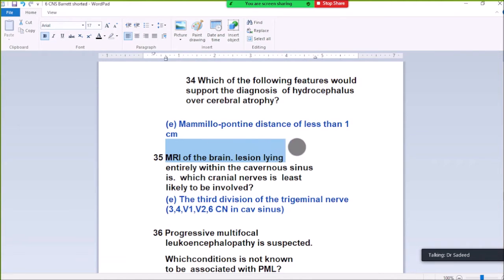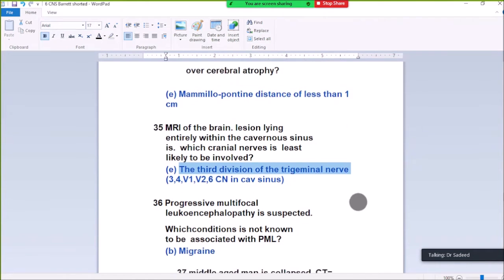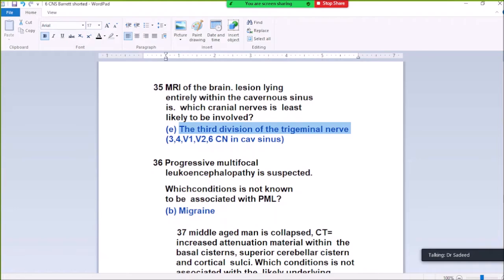Question 35. MRI of the brain shows a lesion lying entirely within the cavernous sinus. Which cranial nerves pass through the cavernous sinus? Third, fourth, V1, V2, fifth cranial nerve divisions 1 and 2, and sixth nerve pass through the cavernous sinus. When these are involved, V3 is not involved. The third division of trigeminal nerve is not involved. A lesion in the cavernous sinus would not affect V3.